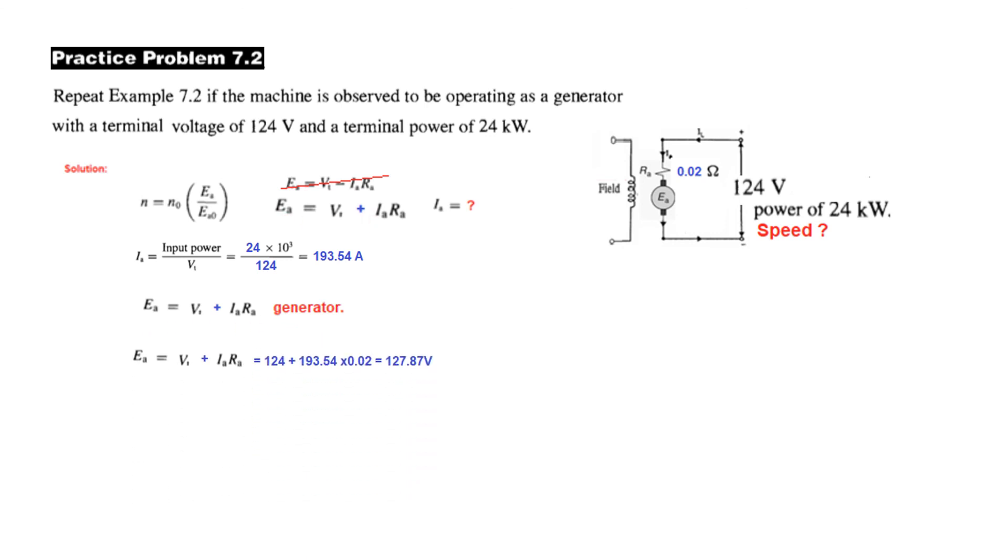And now let's find out the value of Ea from this formula. So Vt is 124 and Ia Ra is 193.54 multiplied by 0.02, so Ea is 127.87 volt. And now we plug in the values here. So N is equal to N0 is 3000, the reference voltage was 125, the new Ea is 127.87, and therefore the new revolution is 3068 revolutions per minute.